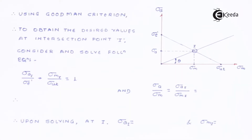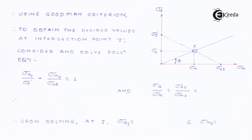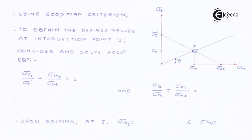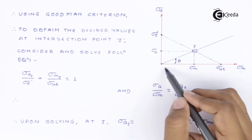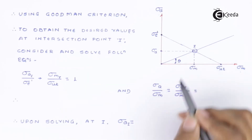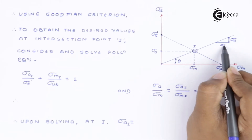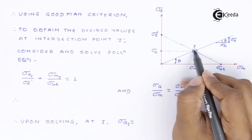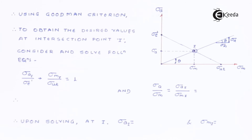Let us now apply Goodman's criteria. We plot a simple graph with sigma_m on the X axis and sigma_a on the Y axis. The Goodman's line connects the endurance limit (sigma_e' = 270 N/mm²) on the Y axis to the ultimate tensile strength (sigma_ut = 660 N/mm²) on the X axis. The operating line at angle theta intersects the Goodman's line at point I — this is the coexisting intersection point we need.